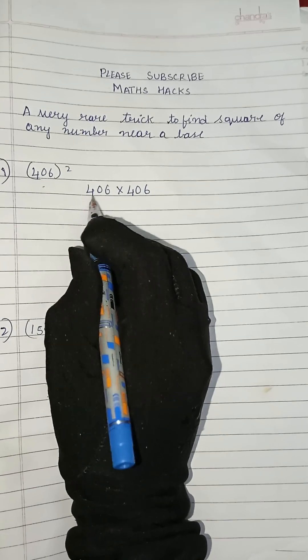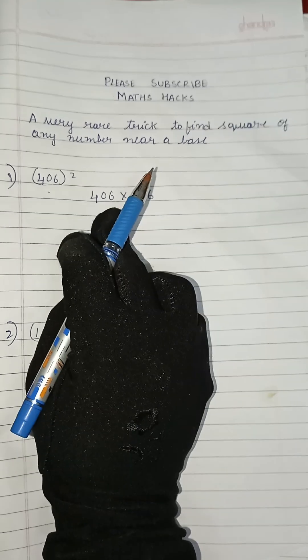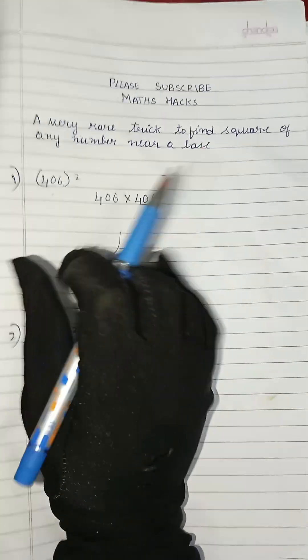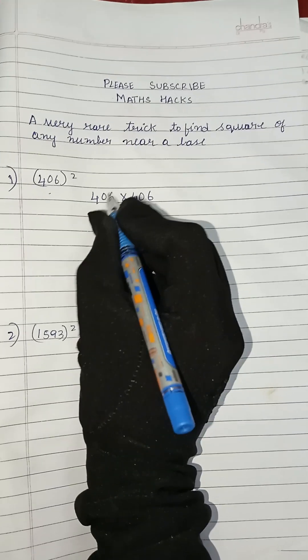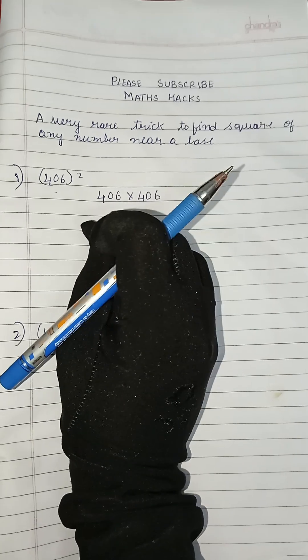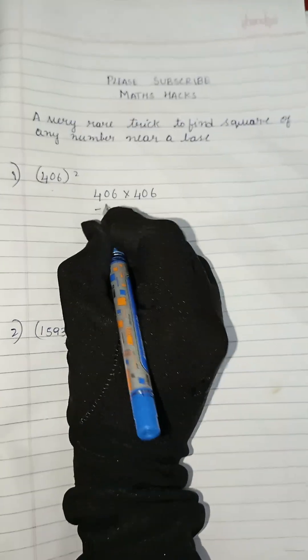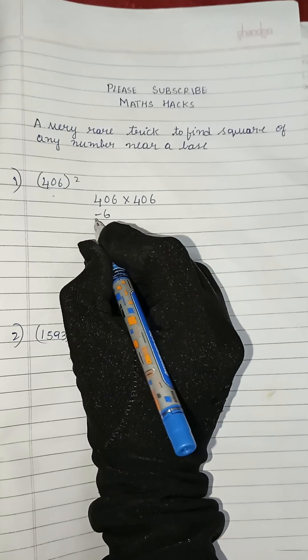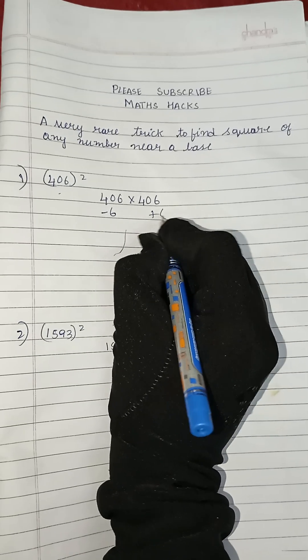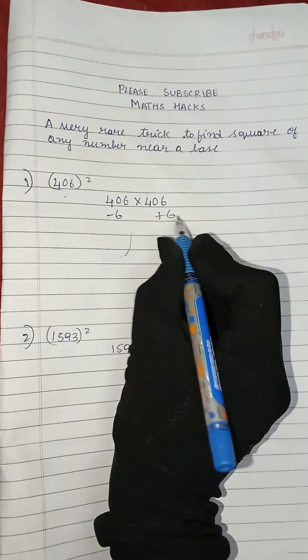Which is the nearest number to 406? The nearest number is 400. To make this 400, how many digits we have to subtract? We have to subtract 6. So 406 minus 6 gives you 400. If it is minus 6 here, we will add plus 6.